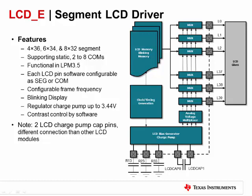The FR4133 supports up to 256 segments using the LCDE module. It can drive up to 8 comm lines and is functional even in LPM 3.5. In software, each LCD pin is configurable as SEG or COM. There is also capability for individual segment blinking using a separate blink memory for 2 to 4 MUX displays, and an internal charge pump up to 3.44 volts for internal voltage generation. This helps enable contrast control by software even when the MSP430 is in low power modes.